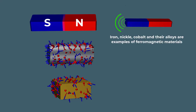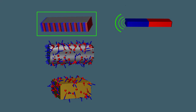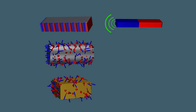Iron, nickel, cobalt, and their alloys are classic examples of ferromagnetic materials. Permanent magnets are made from ferromagnetic materials that have been treated to keep these tiny magnetic fields aligned. This is often done by exposing the material to a strong magnetic field during manufacturing.